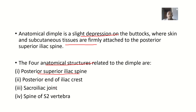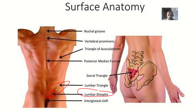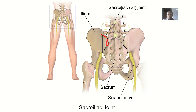Next, we have the posterior end of the iliac crest, which ends right there. After that, we have the sacroiliac joint — where the sacrum meets the ilium, that is the sacroiliac joint.